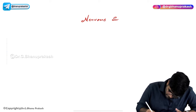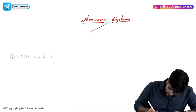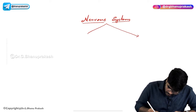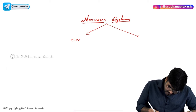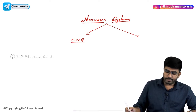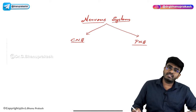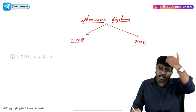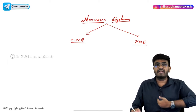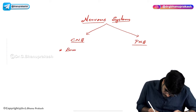The Nervous System is mainly divided into two parts. First part is Central Nervous System and the other is Peripheral Nervous System. The difference between them: Central Nervous System includes the Brain and Spinal Cord — the structures present in the central part of your body.